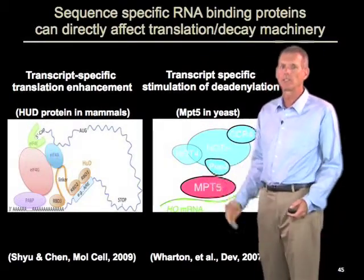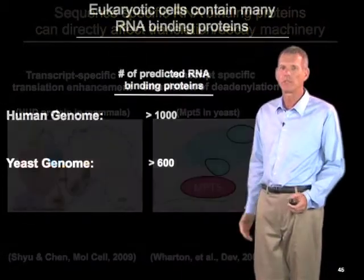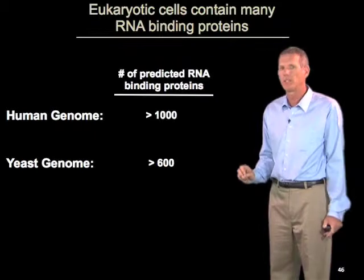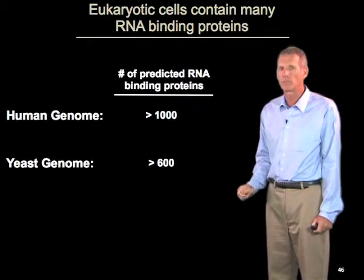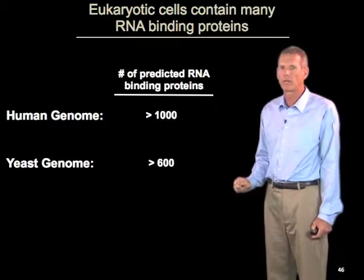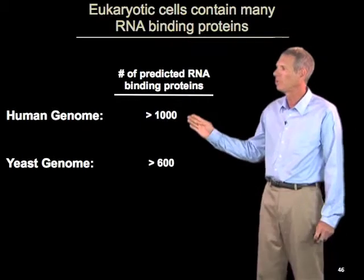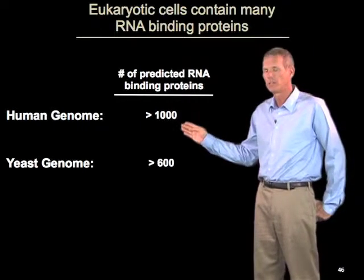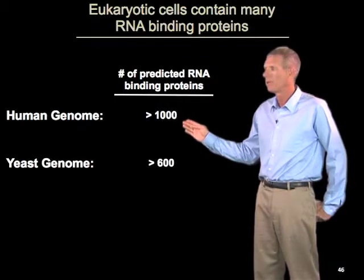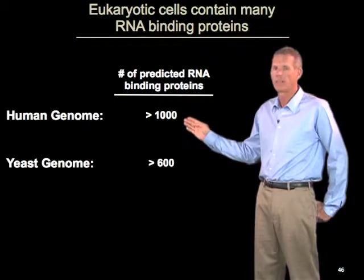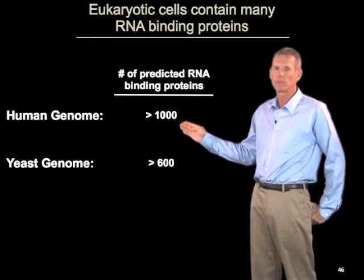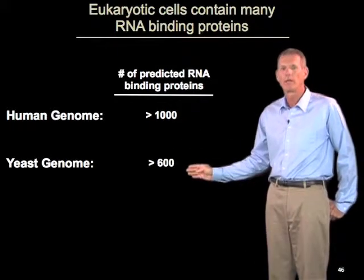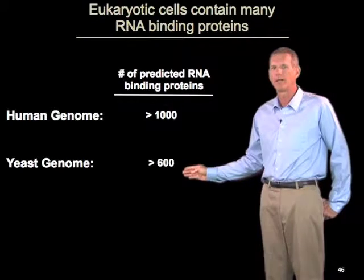We might ask how much of this kind of regulation should we expect — and we should expect a lot of it. If we look in the genomes of organisms, there's a tremendous number of RNA binding proteins. The initial drafts of the human genome predicted greater than 1,000 RNA binding proteins, and this is probably an underestimate, because many proteins bind RNA without having sequence motifs that allow them to be identified as RNA binding proteins. Similarly, the yeast genome has greater than 600 RNA binding proteins.